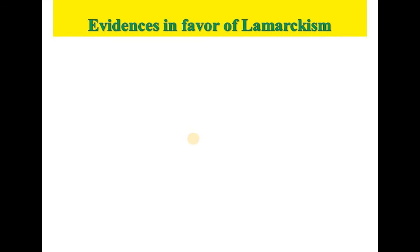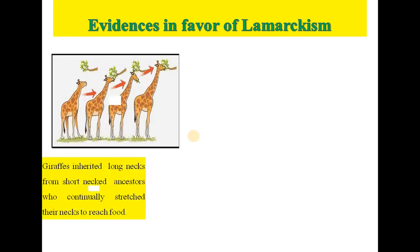Now, what are the evidences which support Lamarckism? The first evidence is the evolution of the long neck in the giraffe. According to Lamarck, the giraffe evolved from deer-like ancestors. These organisms had short necks and forelimbs and grazed on grass.